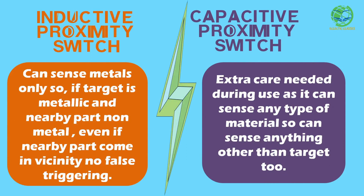Capacitive sensors' installation and use need extra care, as they can sense any type of material. During operation, it must be ensured that only the target object comes in the vicinity of the sensor. If any other part also comes near the sensor, it will treat it as the target and start triggering. In case of inductive sensors, we need not worry as much, since they can sense only metals — so even if nearby non-metal parts come in the vicinity of the sensor, it won't false trigger.